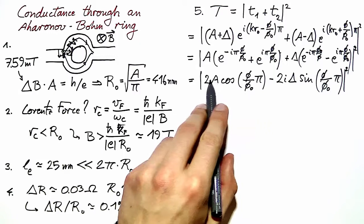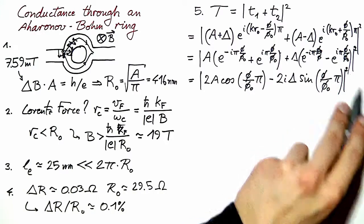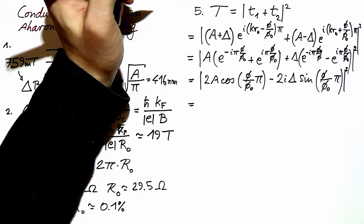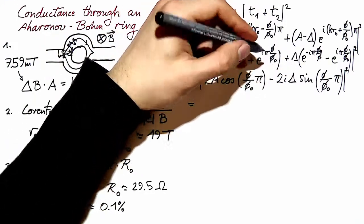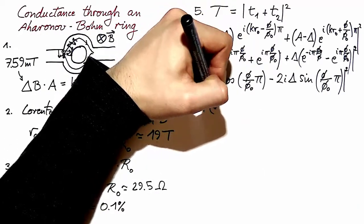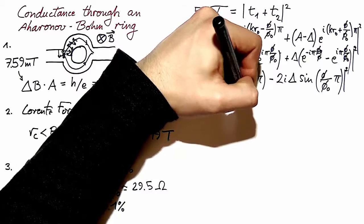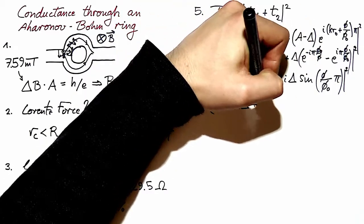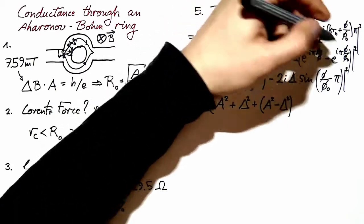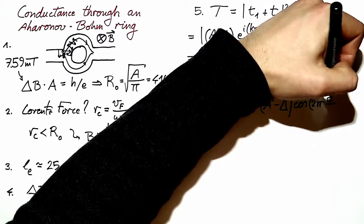We have real number plus i times real number. Collecting everything we get the expression 4 times A² plus Δ² plus the difference of A² and Δ² times cosine of 2π Φ over Φ₀.